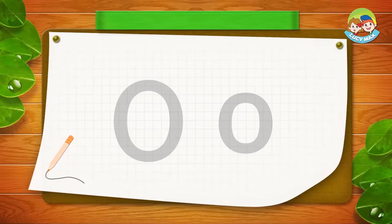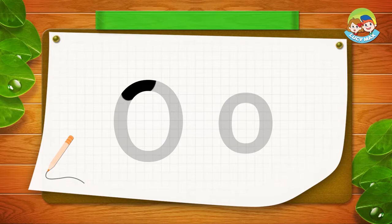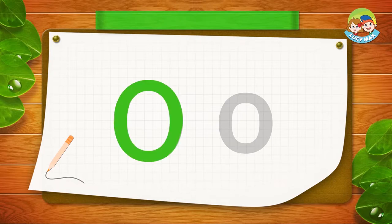Can an ostrich fly? No, it can't. So is an ostrich a bird or not? Yes, it's a bird. Now let's write big O and small o. First, let's try big O. O is just like a circle — it goes down and around all the way. That's a big O.